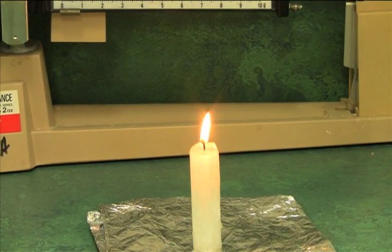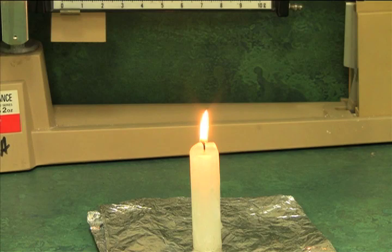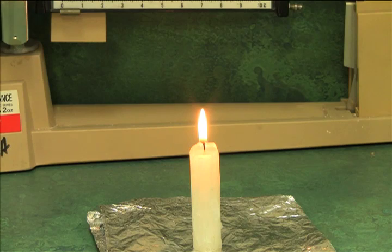Step five says, obtain a jar, place the jar over the candle, and record what you see. Observe carefully the candle wick, the jar, and the flame. And repeat if necessary. So you'll write down those three observations.